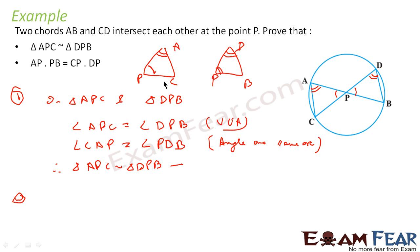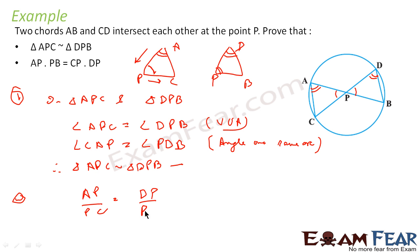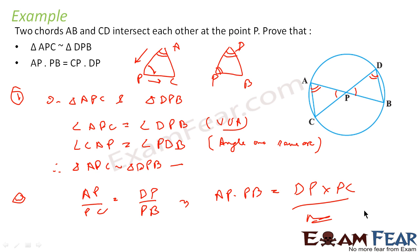Since the triangles are similar, we can say that AP by CP is equal to PB by PD, which gives us AP into PB is equal to CP into PD. Very simple — you just have to prove that the triangles are similar.